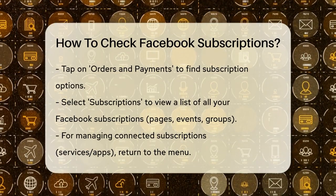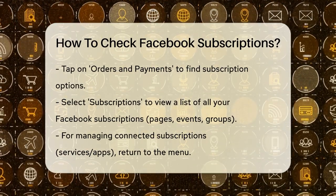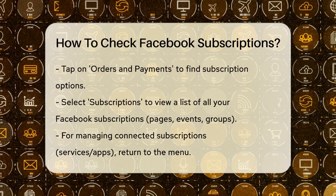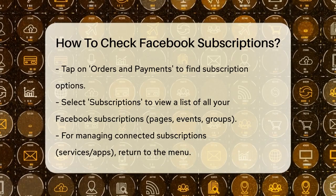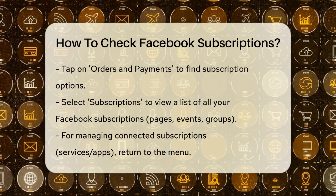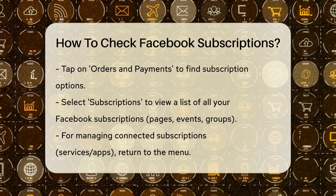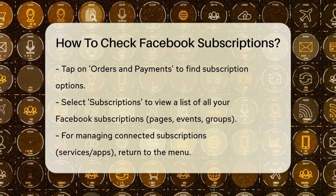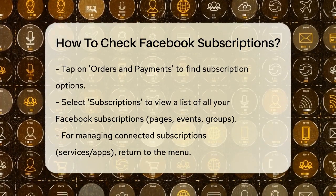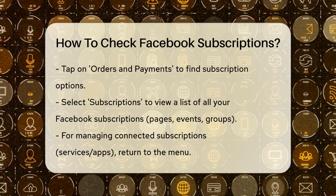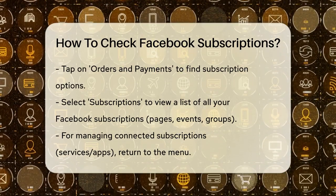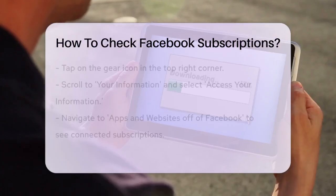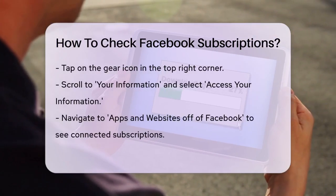You need to tap on Orders & Payments. In the Orders & Payments section, you'll see a list of options. Here you need to tap on Subscriptions. This is where you'll find a list of all your subscriptions on Facebook, whether it's a page, an event, or a group.